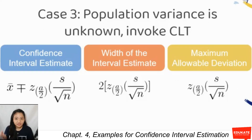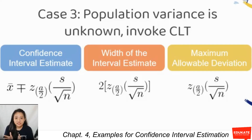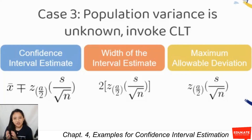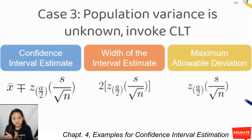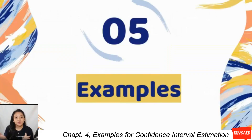Case three: population variance is still unknown, but with the special condition that your sample size is large enough to invoke the Central Limit Theorem (CLT). In this case, the confidence interval estimate will use the z-table for its tabular value, and the numerator of the standard error will be s, the point estimate of the population standard deviation.